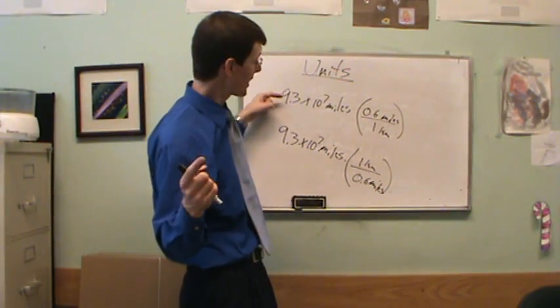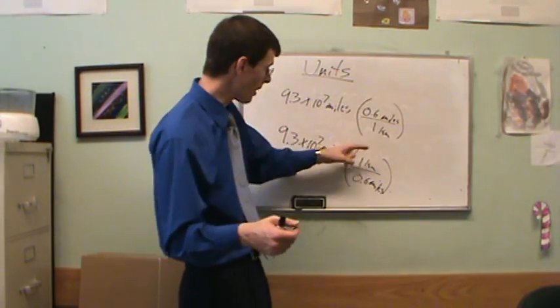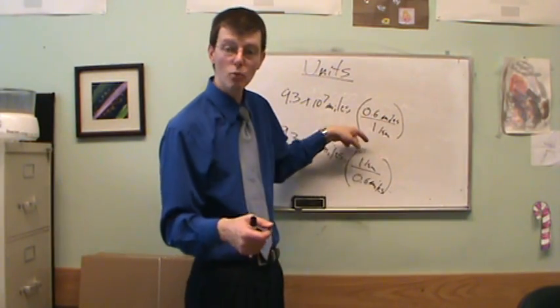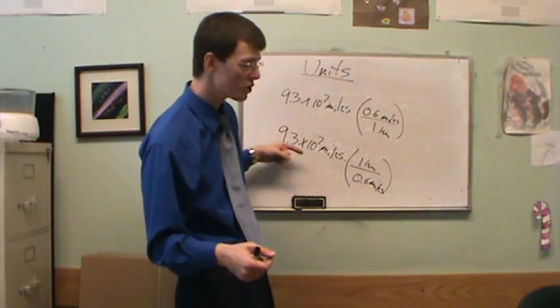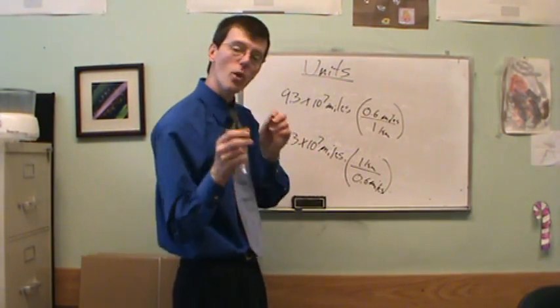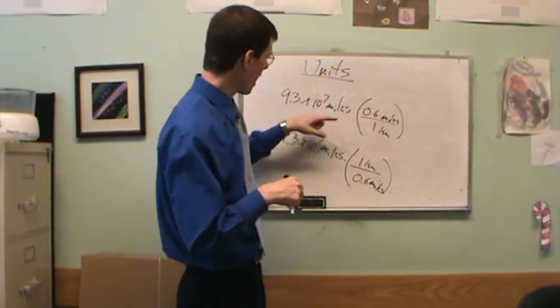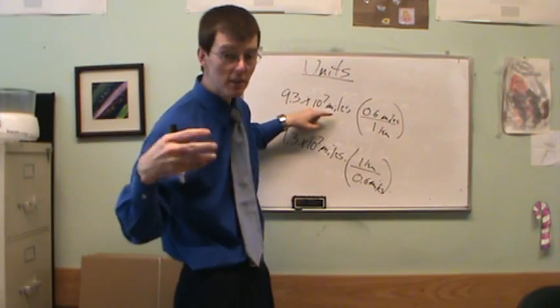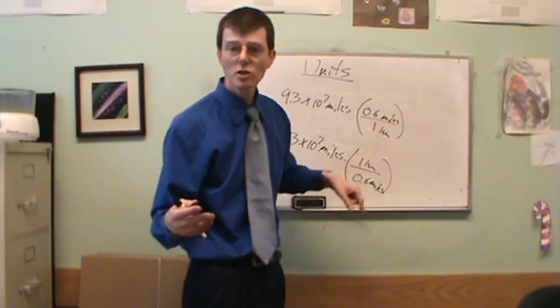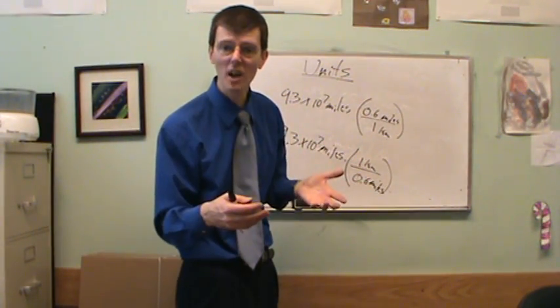If this top expression was right, I would multiply by the 0.6. Or if the bottom one is right, well, this is dividing by 0.6. This expression says take 93 million miles and divide it by 0.6. And the way I know which one's the right way to do is I look at the units. Up here, I say, okay, miles multiply and divide just ordinarily. So this is miles times miles divided by kilometers. So that means my result would be miles squared divided by kilometers. That's not right.